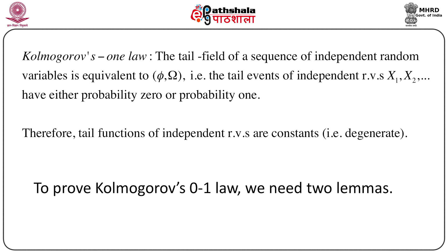Now we state the famous Kolmogorov 0-1 law, which says that the tail sigma field of a sequence of independent random variables is equivalent to {∅, Ω}. That means tail events of independent random variables X1, X2, ... have either probability 0 or probability 1. The independence assumption is very important here. This can be interpreted another way: tail functions of independent random variables are constant, that is, degenerate.